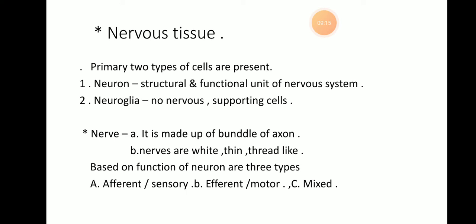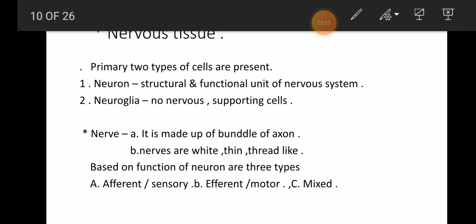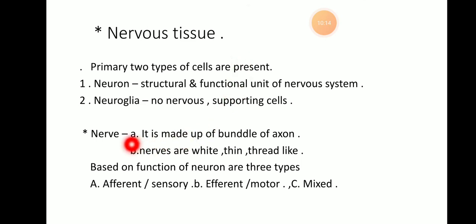Now we will turn to the next point: nervous tissue. Two types of nervous tissues are primarily present in the nervous system of animals. These are the neuron and the neuroglia. Neurons are the structural and functional unit of the nervous system. Neuroglia performs the function of supporting cells. In the nervous tissue, nerves are present — nerves are made up of a bundle of axons. Nerves are white, thin, and thread-like.